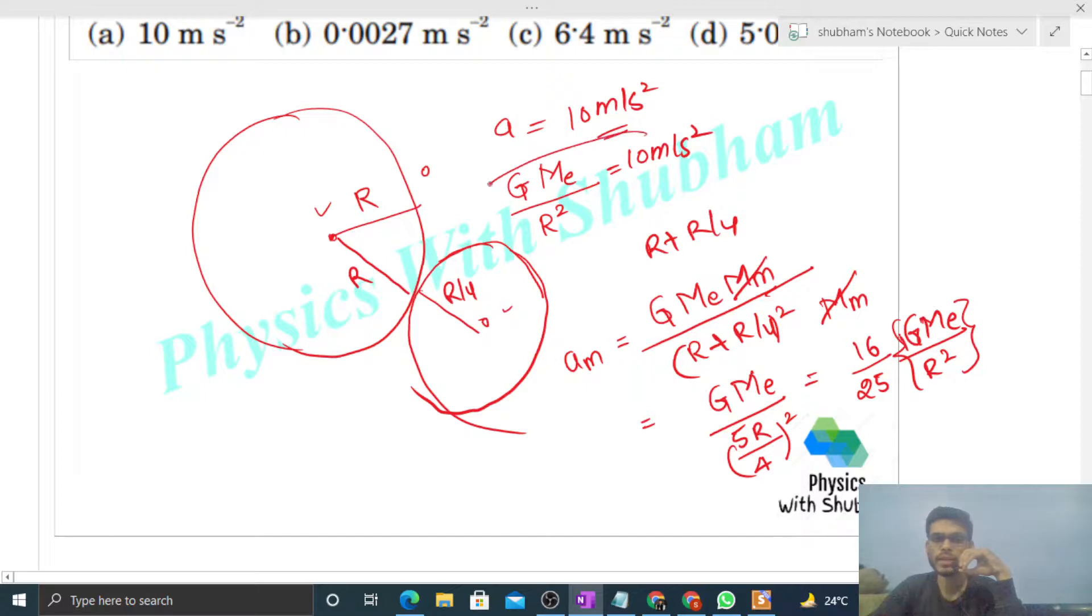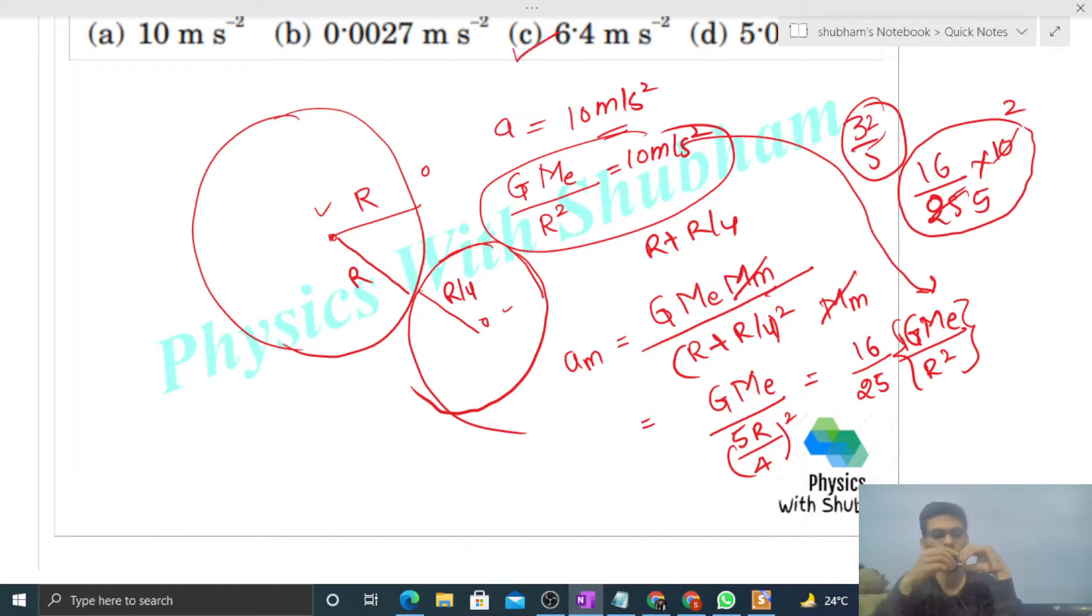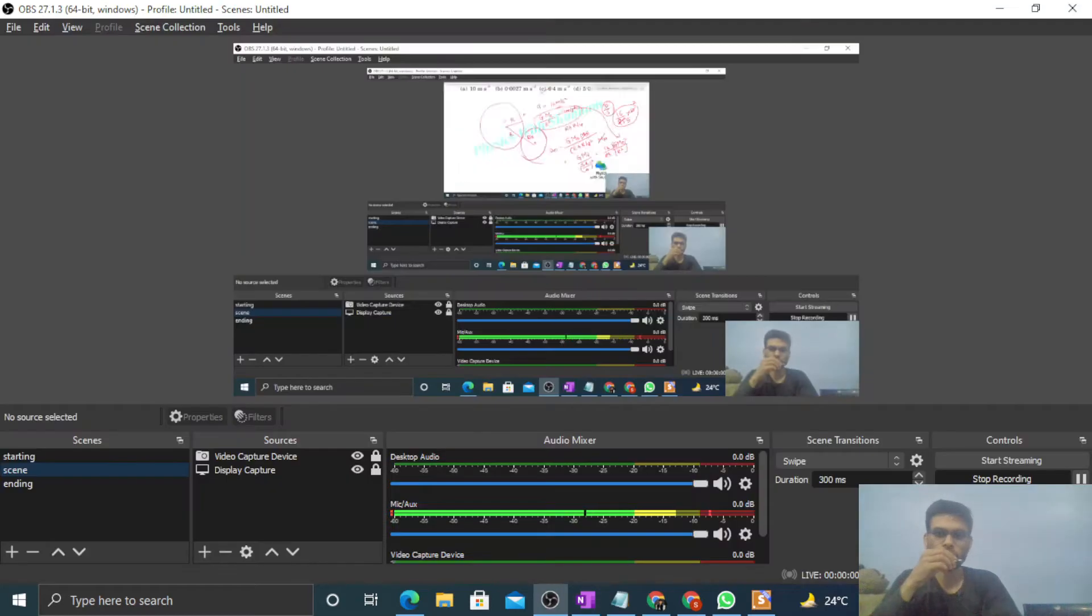This is the acceleration of the moon just before the collision. So you can solve it, 2 and 5. I think 6.4 is the correct answer. So I think you have understood. Let me know if you still have any confusion, we can discuss further.